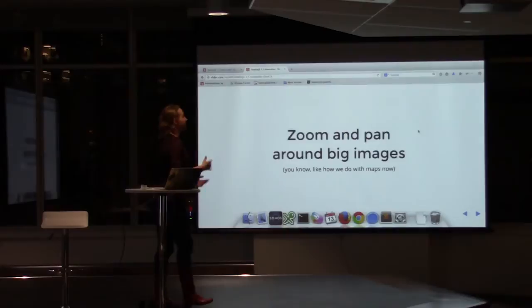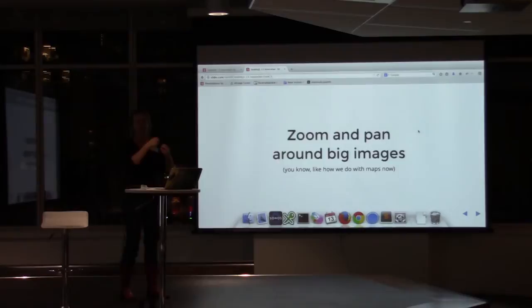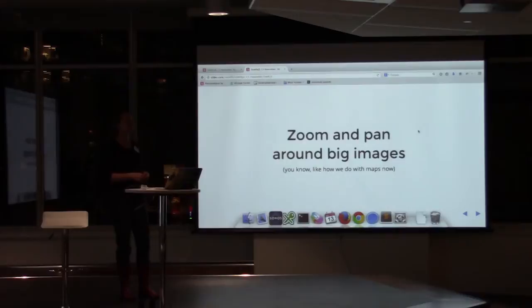The whole point of this is that you can zoom and pan around big images like you're used to being able to do with maps. Everybody does this now — even five years ago this wasn't the case. Not everybody had a smartphone, but now probably all of you at some point today went like this to find your bus stop or figure out where a building was. And if you change your perspective just a little bit, you realize that a map is just a special case of a big image.